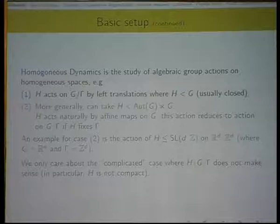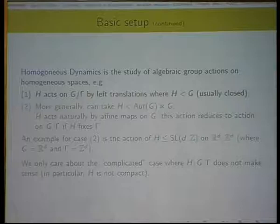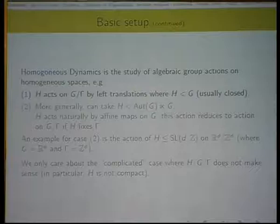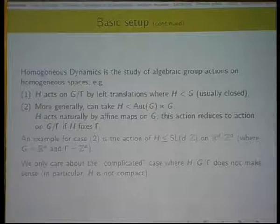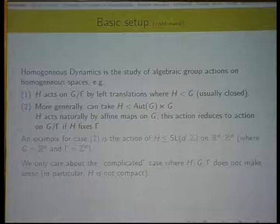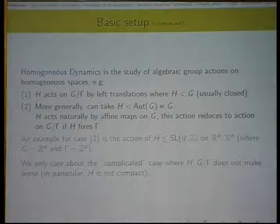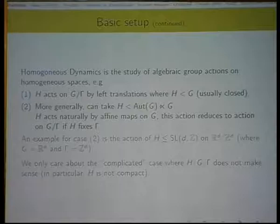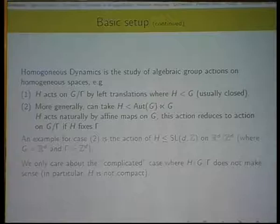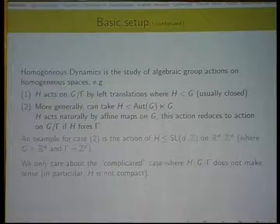So one way, one natural action is you could just take a subgroup of the group G, and it acts on G mod gamma by left translations. Usually, I take H to be closed, though, as long as it's locally compact, I don't have to make this restriction. Slightly more generally, I can take H to be a subgroup of the skew product of the automorphism group of G and G, where I identify G with its action on itself by left translation. Then, this group H acts naturally by affine maps on the group G, and as long as it preserves the lattice gamma, this action reduces to an action on G modulo gamma.